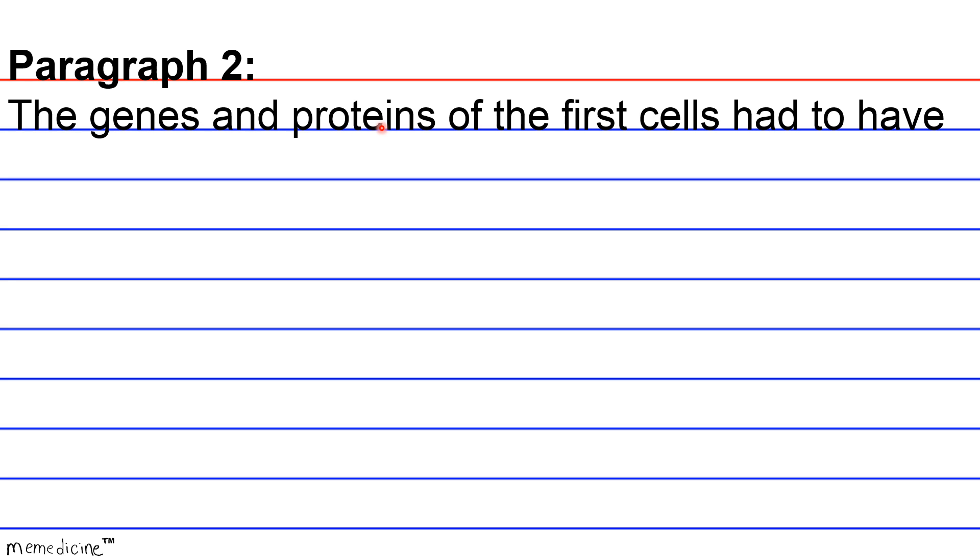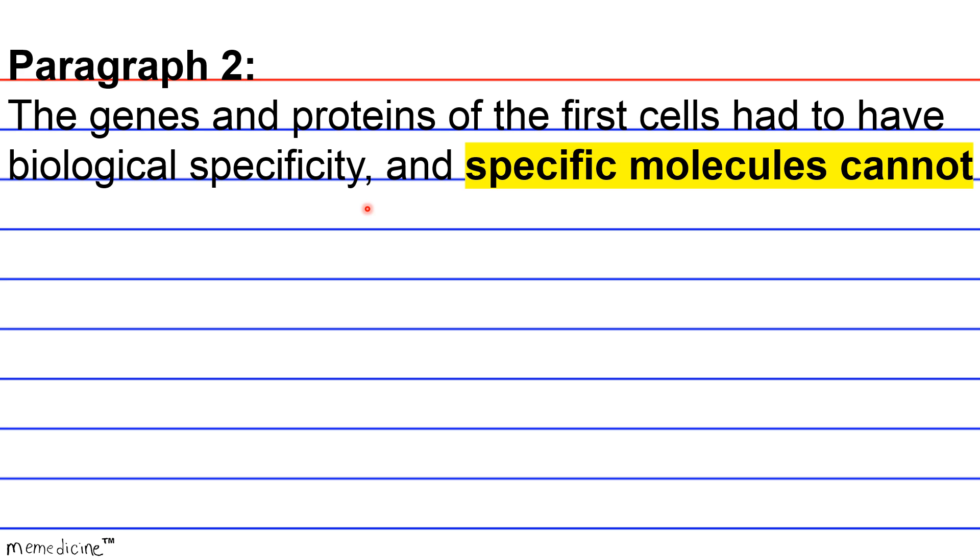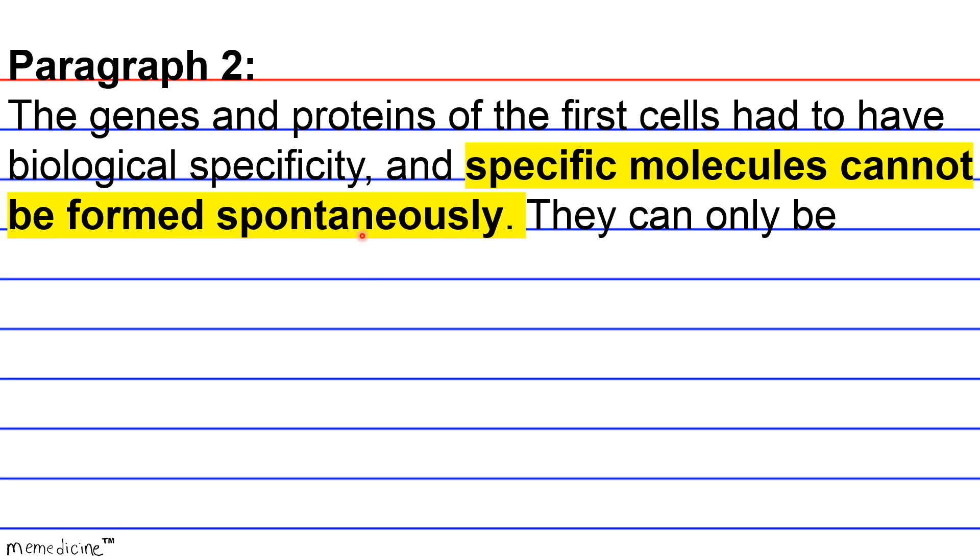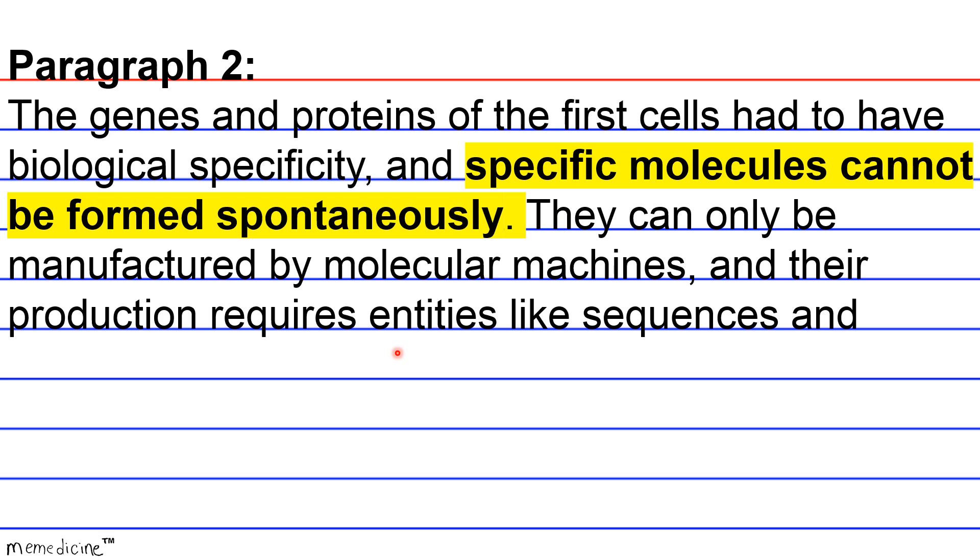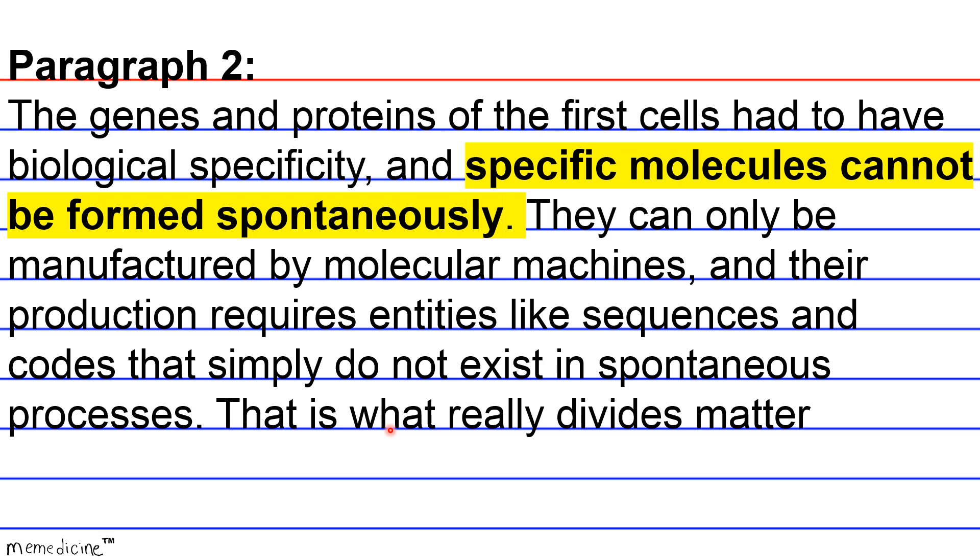The genes and proteins of the first cells had to have biological specificity, and specific molecules cannot be formed spontaneously. They can only be manufactured by molecular machines, and their production requires entities like sequences and codes that simply do not exist in spontaneous processes. That is what really divides matter from life.